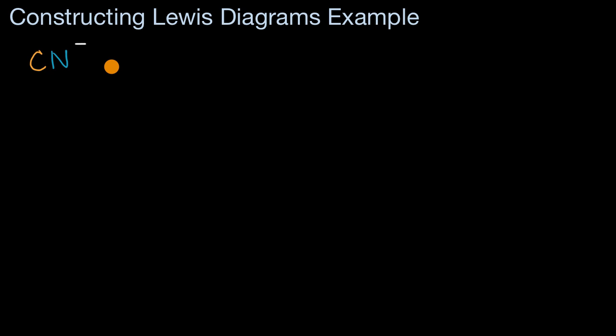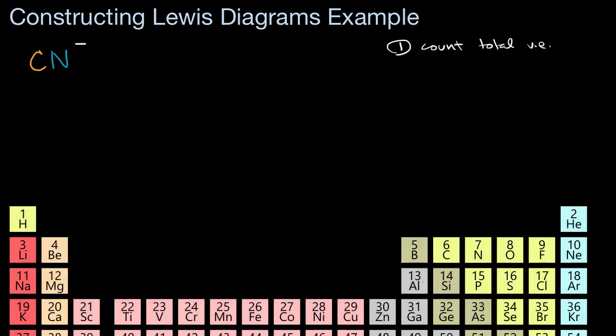Pause this video and see if you can have a go at that. All right, now let's do this together. We've already seen in many videos, the first step is to essentially count the total valence electrons that we're dealing with. And the reason why we do that is to make sure that we're allocating all the valence electrons. To help us there, we can look at a periodic table of elements.